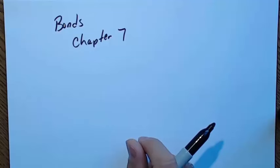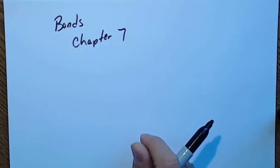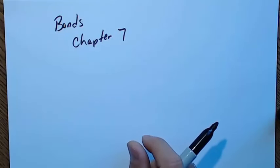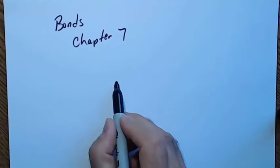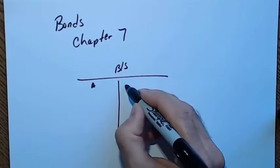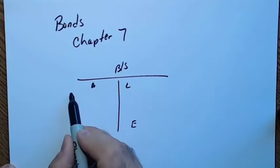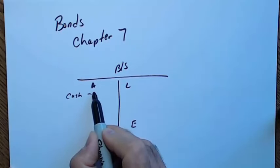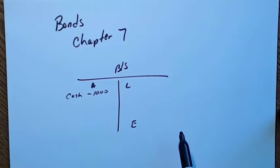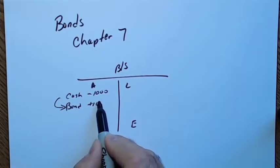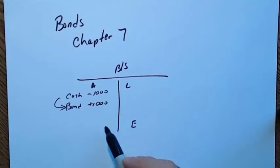You can look at bonds from two different angles. One angle is that you're an investor who wants to buy a bond and put it in your portfolio. On your balance sheet, you have assets, liabilities, and equity. You take your cash and reduce it — say, by $1,000 — and flip it into a bond. Your bond account goes up by $1,000; it's an asset from the investor's point of view.